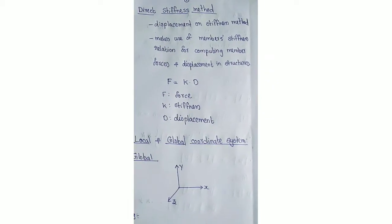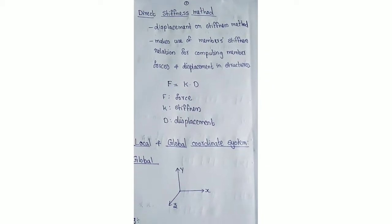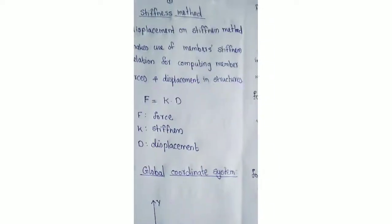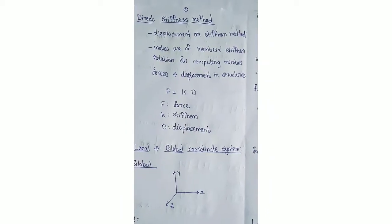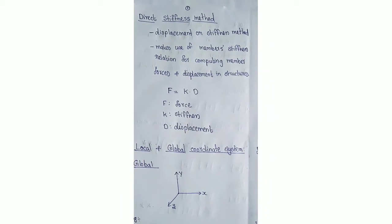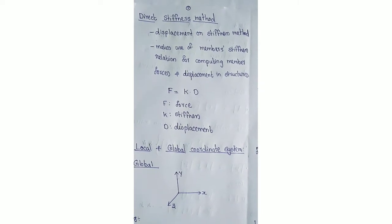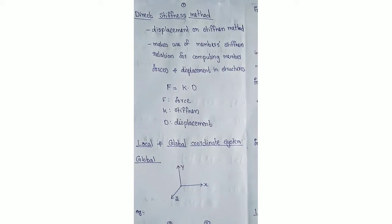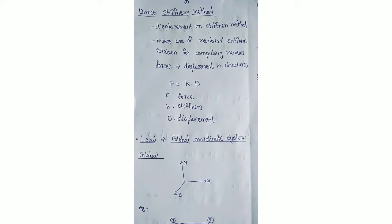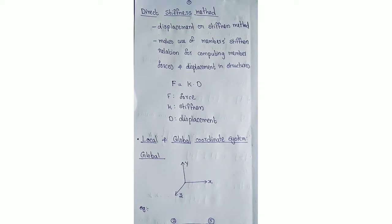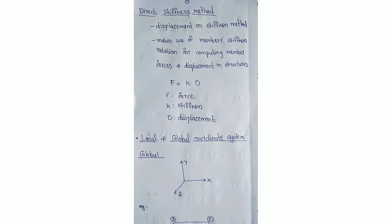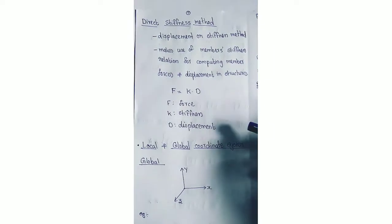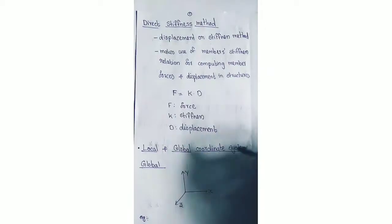In general, there are two methods of analysis: force method and displacement method. Minimum strain energy method, theorem of least work, and consistent deformation are examples of force method. Slope deflection method, moment distribution method, and Kani's method are examples of displacement method. Direct stiffness method, discussed in this video, comes under the category of displacement method.